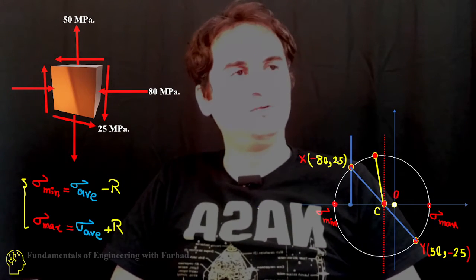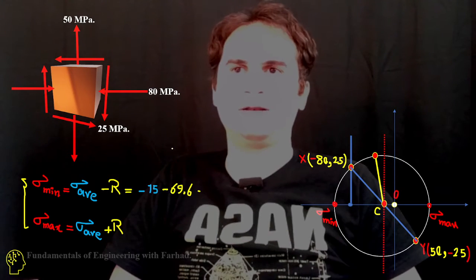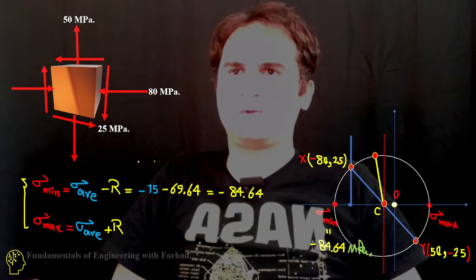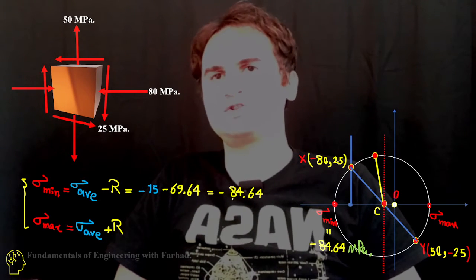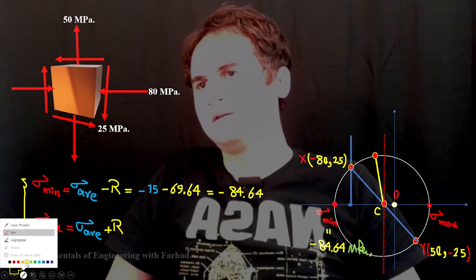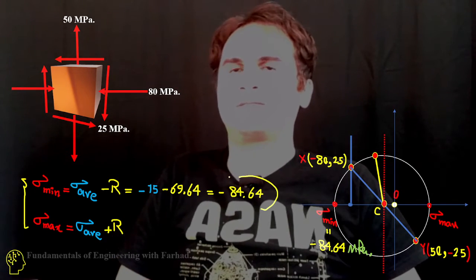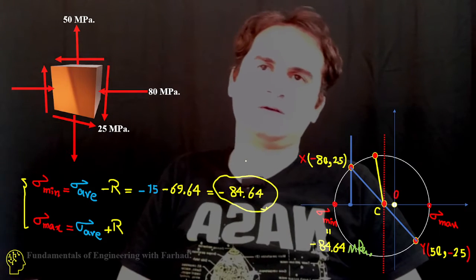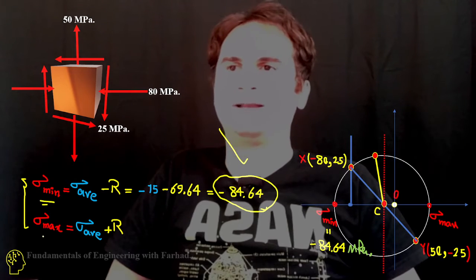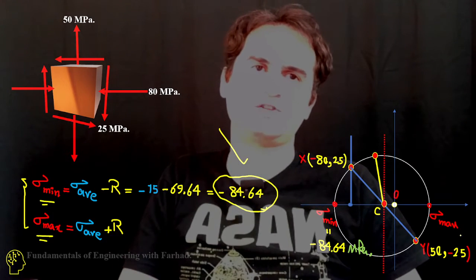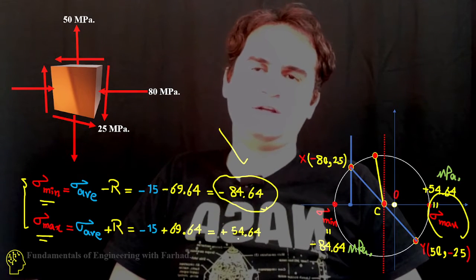Now we know what our radius is and what our sigma average is. So if you just place it in the formula, it gives us sigma minimum and sigma maximum is sigma average plus r, which is a positive 54.64.